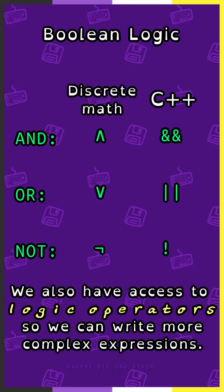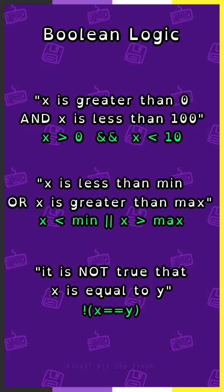And is double ampersand, or is double pipe, and not is exclamation point. So we can write statements like x is greater than 0 and x is less than 100, x is less than min, or x is greater than max. It is not true that x is equal to y.